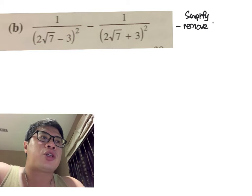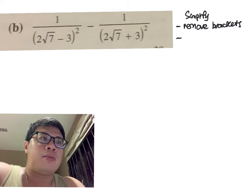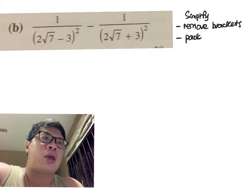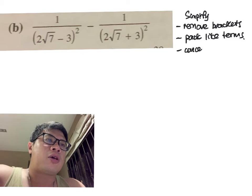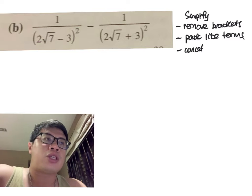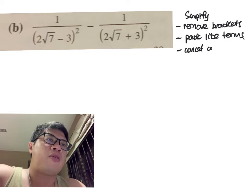We remove brackets as much as possible so that we can unpack the terms, and we always try to pack the like terms together to make your fraction as simplistic as possible. You try to cancel and simplify fractions as possible, so you try to cancel common factors.